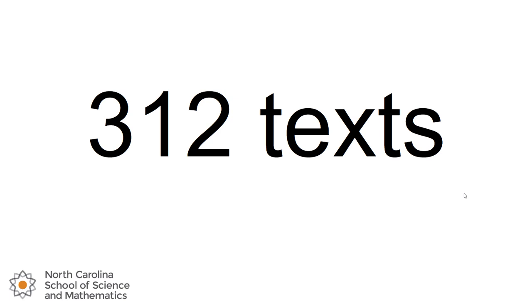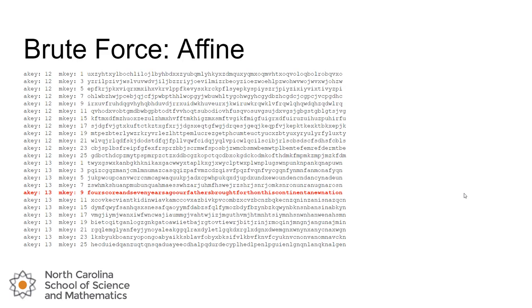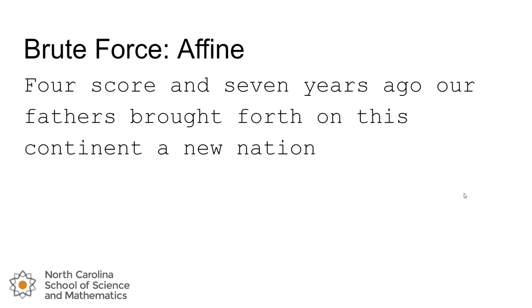If you were eagle-eyed as I was going through all 312, you might have noticed that it was the additive key of 13 with the multiplicative key of 9 that generated something that looked like English. But that is again very visual. And when there's more than 26 — and 312 isn't that many in the grand scheme of things — we're going to study ciphers in this course that have thousands and millions of keys. Trying to visually inspect and find the one that looks like English is not going to be the most efficient use of our time.